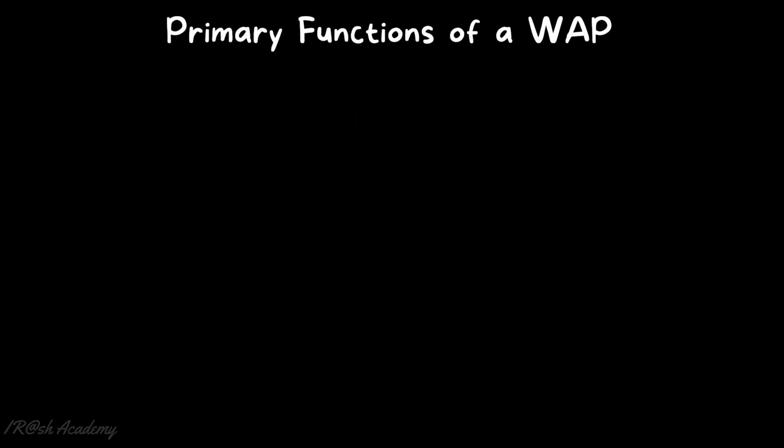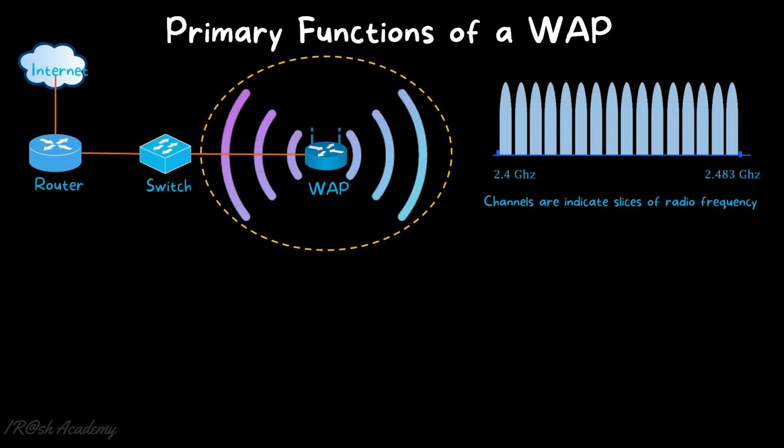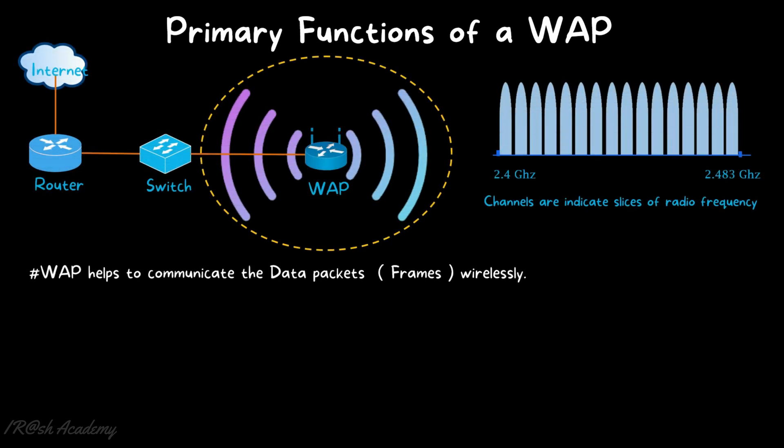Let's discuss the primary functions of a wireless access point. Point number one: a wireless access point helps to communicate data packets in the form of frames wirelessly. Wireless access points are network devices like a network hub and network switch, but one key difference is that the wireless access point doesn't have Ethernet interfaces to connect devices using cables.